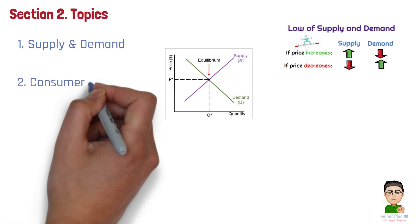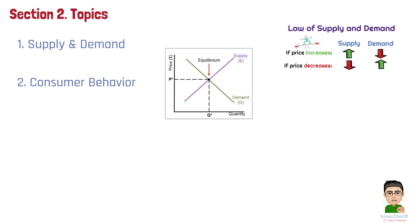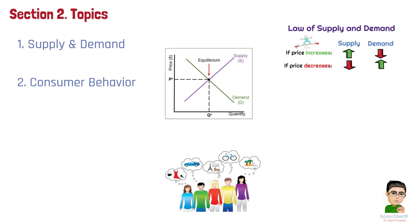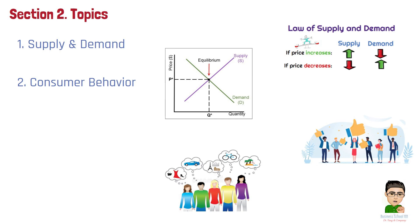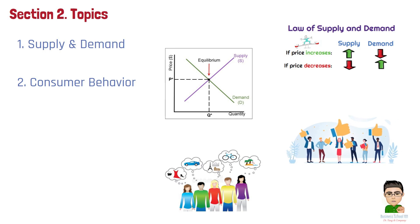Number 2. Consumer Behavior. Consumer behavior explores how individuals make purchasing decisions to maximize their satisfaction or utility, given their budget constraints. It involves understanding preferences and trade-offs, as consumers choose between different goods and services to achieve the greatest overall happiness within their financial limits.